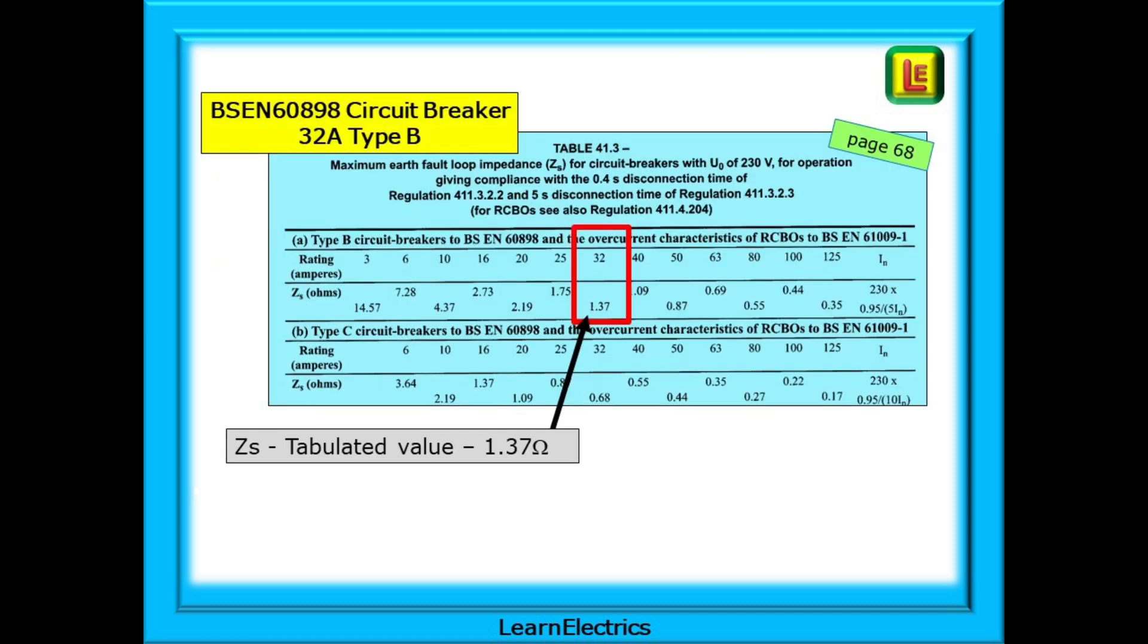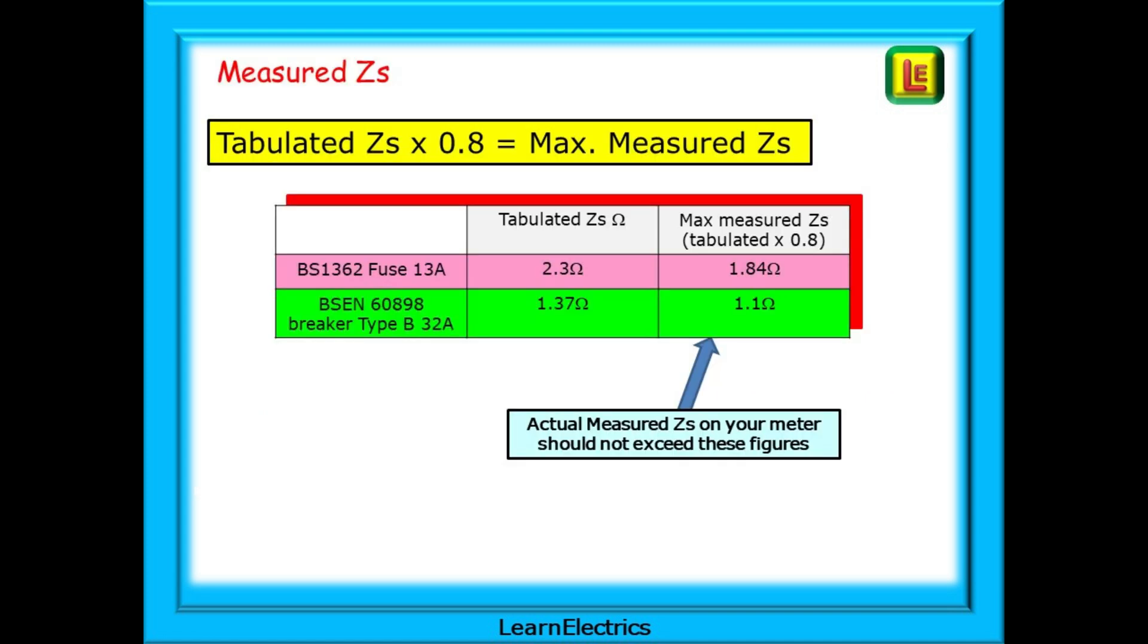And for the BS EN 60898 circuit breaker, table 41.3 on page 68 will give us the tabulated value for a 32 amp type B device. This is 1.37 ohms and again it needs adjusting for the maximum measured on-site values. Tabulated values, those taken from the tables in the regs book, should be multiplied by 0.8 to arrive at the 80 percent maximum permitted measured ZS value.